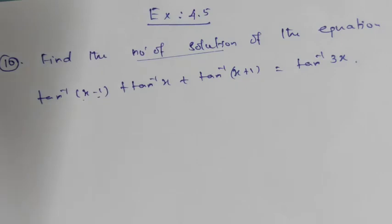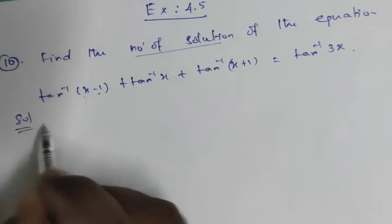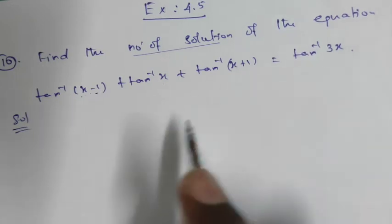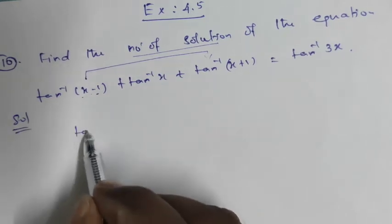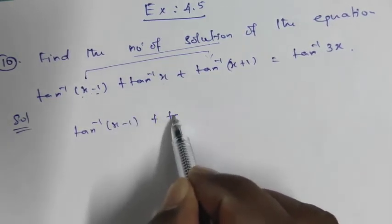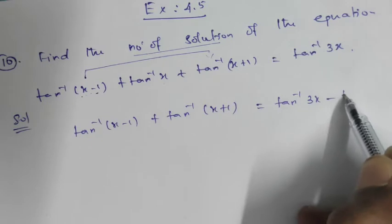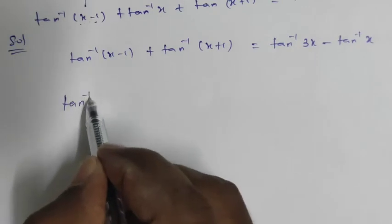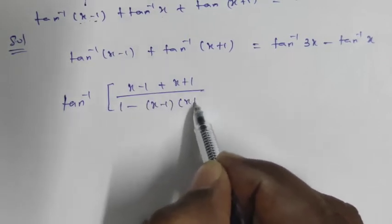We will apply the tan inverse addition formula to the left side. Combining tan inverse of (x minus 1) and tan inverse of (x plus 1) using the formula tan inverse of a plus b, that is (x minus 1) plus (x plus 1) divided by 1 minus (x minus 1) into (x plus 1).